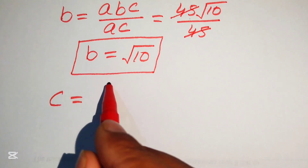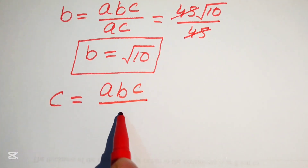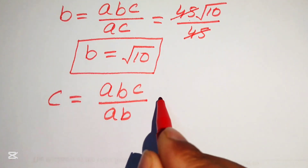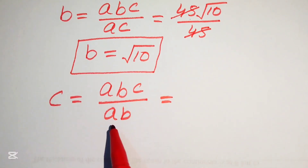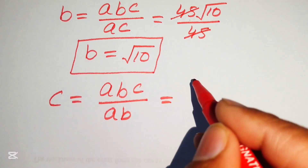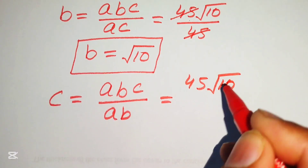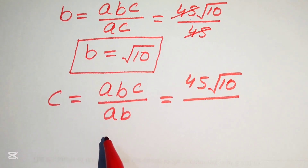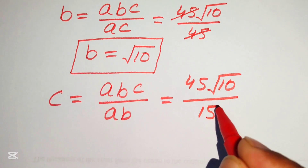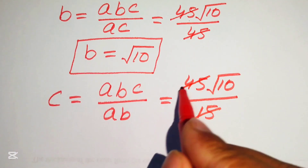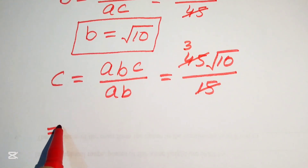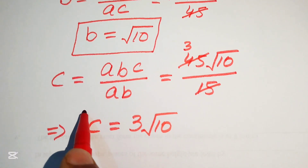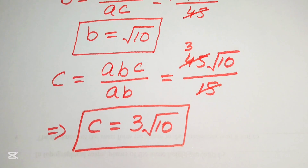Now we find c. We write c = abc / ab. The ab cancels, leaving c. Substituting abc = 45√10 and ab = 15 (given in the problem), we get c = 45√10 / 15 = 3√10.